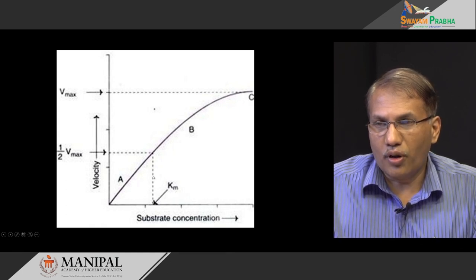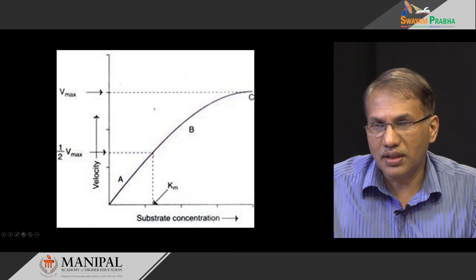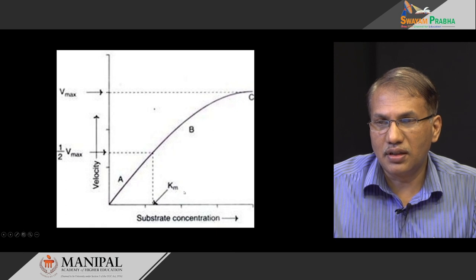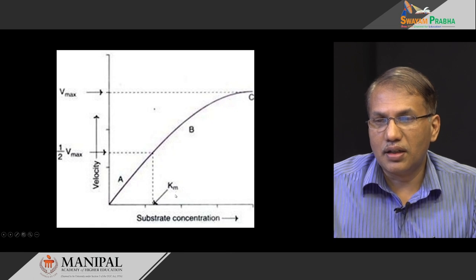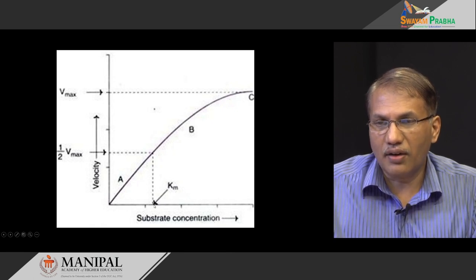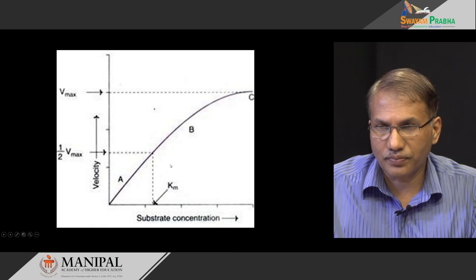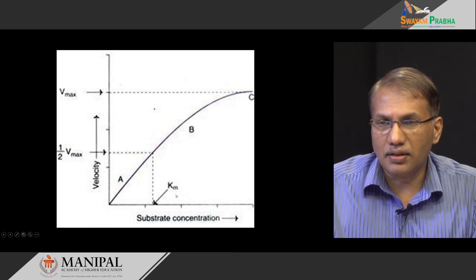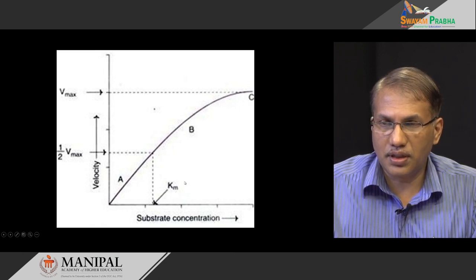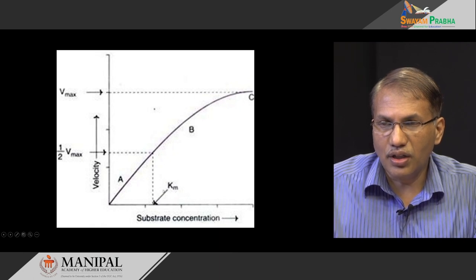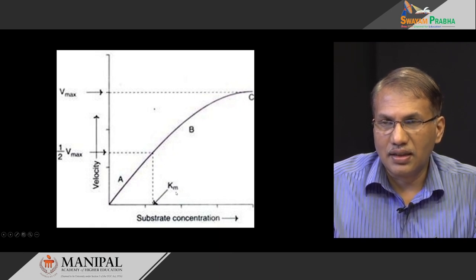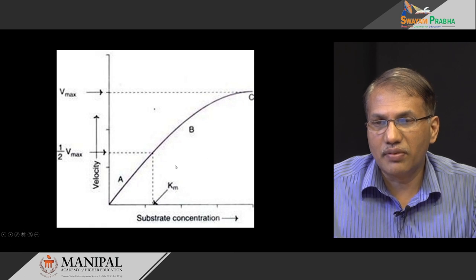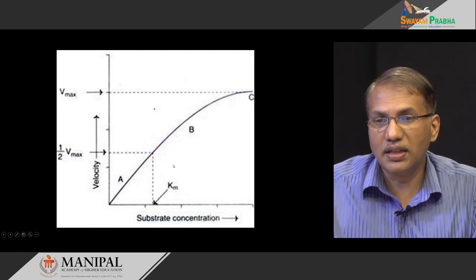The point at which the half-maximal velocity is extrapolated from the graph to the x-axis represents the Km value. Km is the Michaelis constant — it is the substrate concentration at half-maximal velocity. This tells us about the affinity of the enzyme towards the substrate. Whenever the Km value is less, the enzyme has maximum affinity for the substrate — that is an inverse relationship.